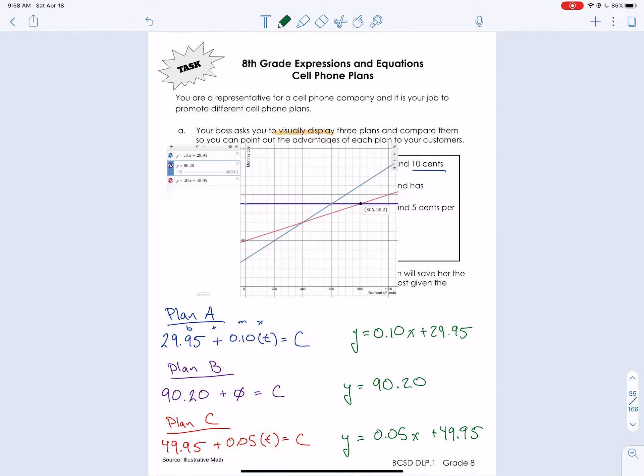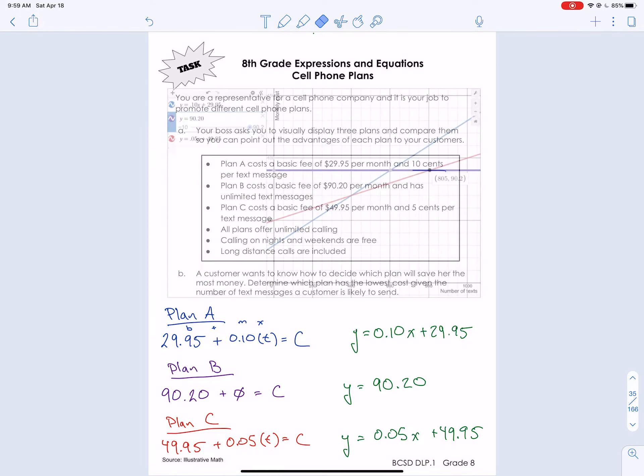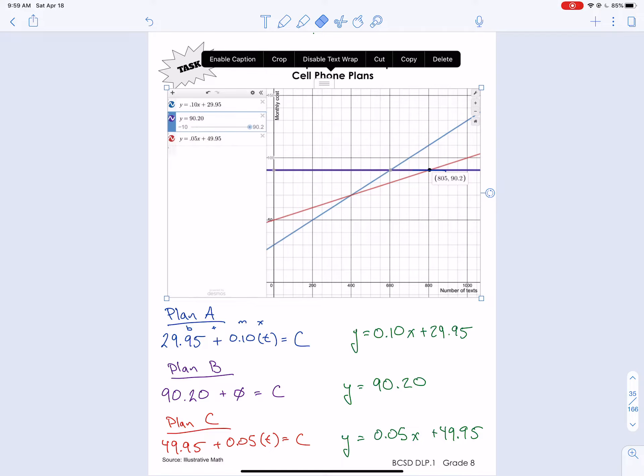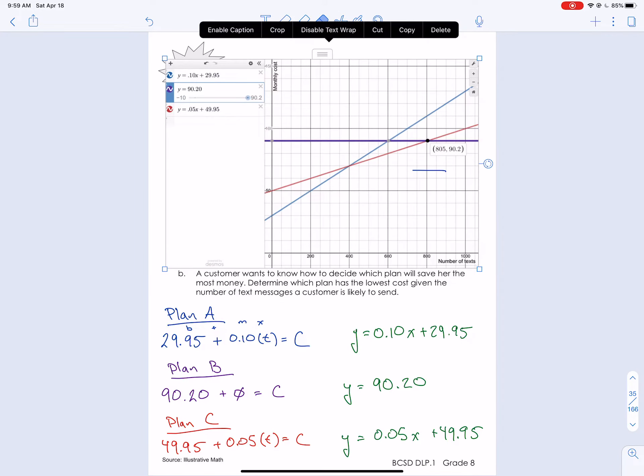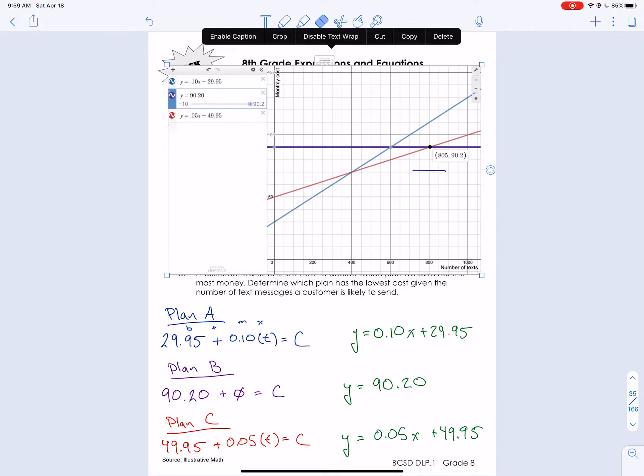So there's some important points here. Any place where those lines cross each other tells us some new information. So thinking about plan A. So if we're looking at, just looking at the x-axis here, if we're only texting 200 texts a month, which plan would be the cheapest? So 200 texts a month. Which plan would be the cheapest? So think about that. I'm actually going to save this so we can take a look at it. So here's our graph. We have our three cell phone plans. We have a visual of them. That's what we're supposed to do. And then we need to answer some questions.